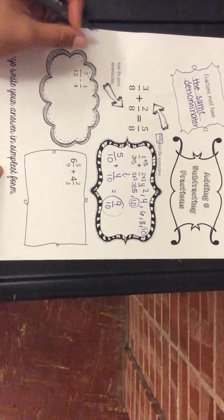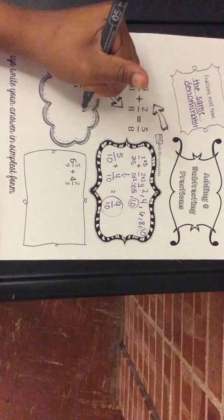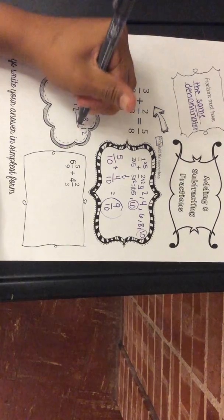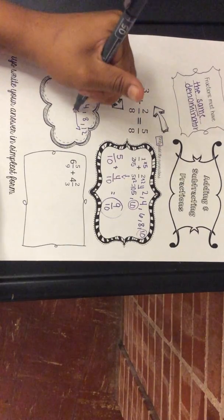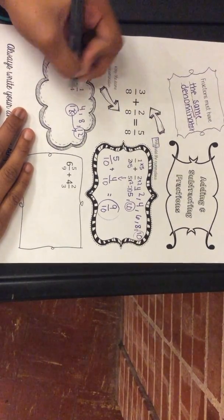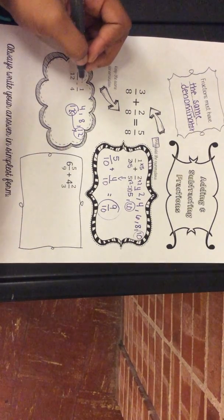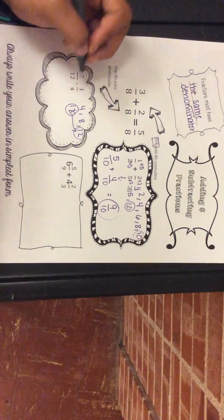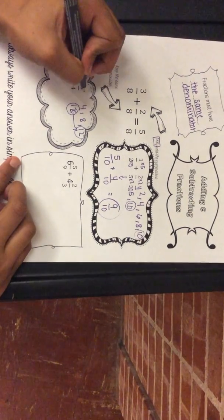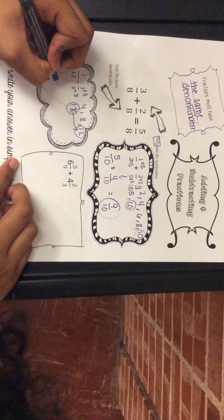When you're subtracting fractions, you have to make sure they have the same denominator, just like when you're adding. Count out your numbers — since one denominator is four, you count by fours. The least common multiple of four and twelve is twelve. Four goes into twelve three times, so you multiply by three.